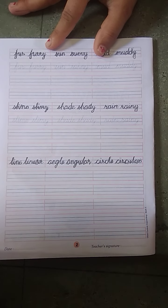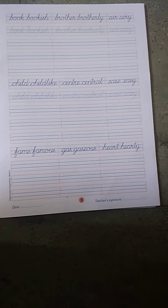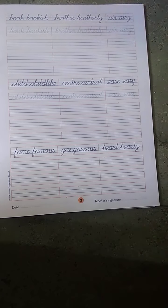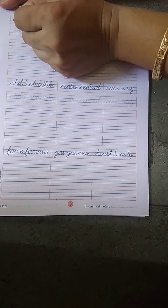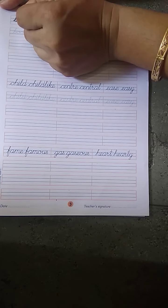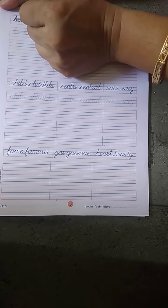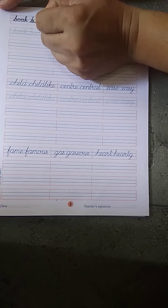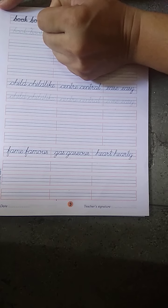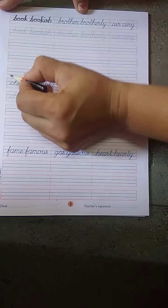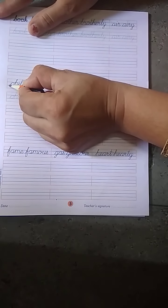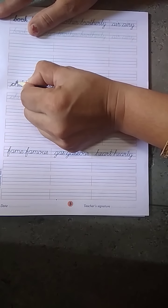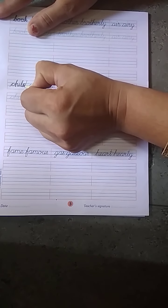Then page number 3. Book. B, double O, K. B, double O, K, I, S, H. Then T, H, I, L, D.